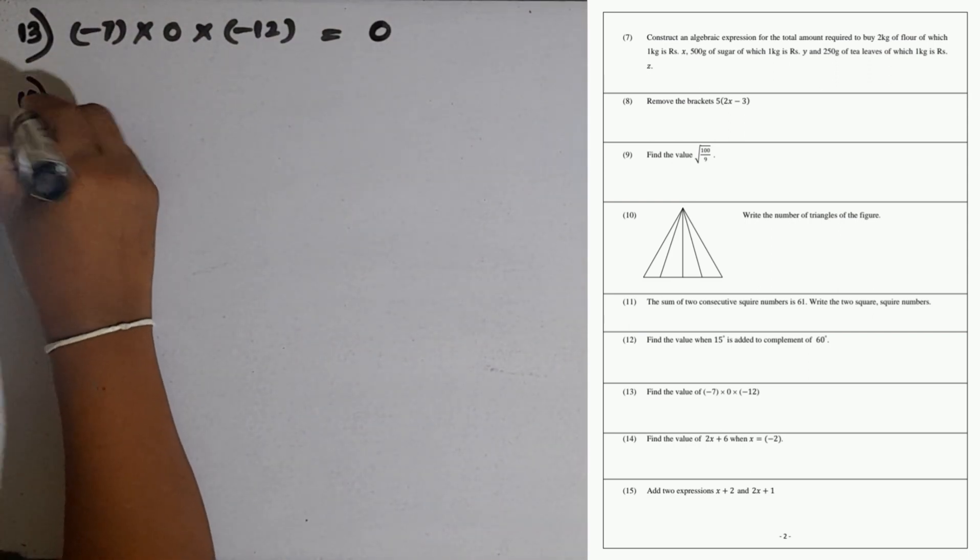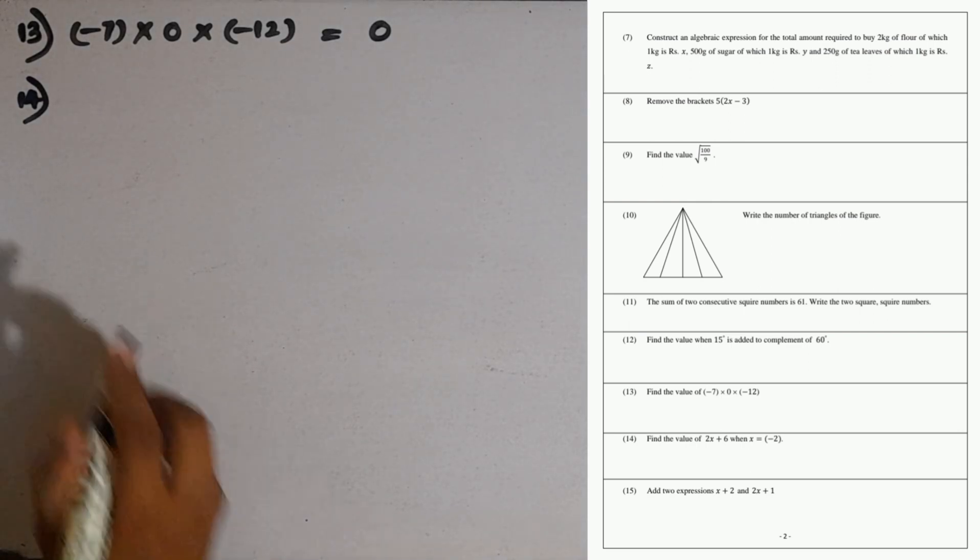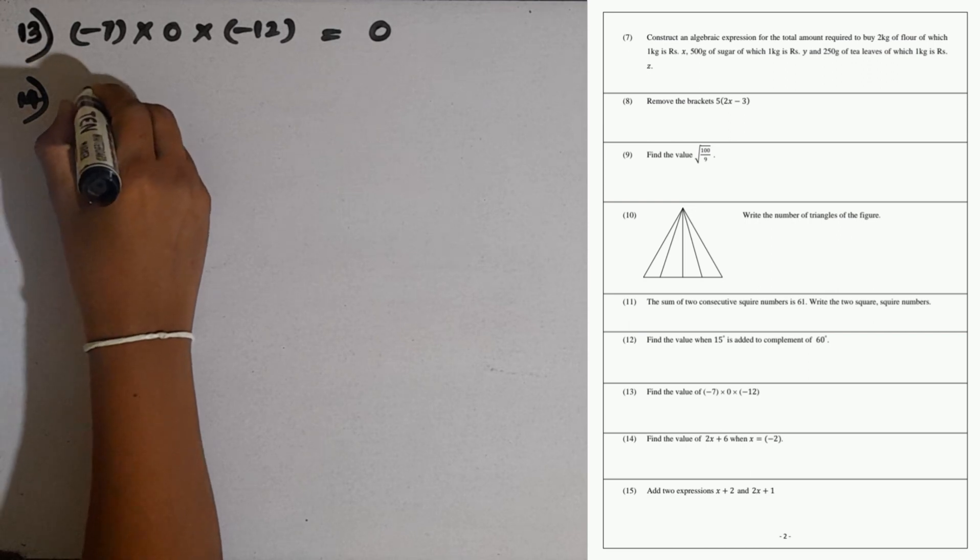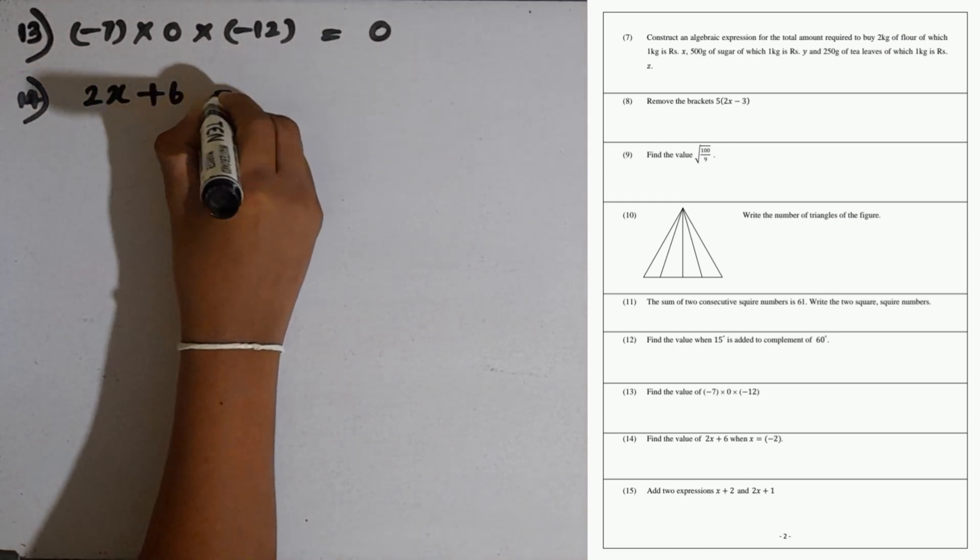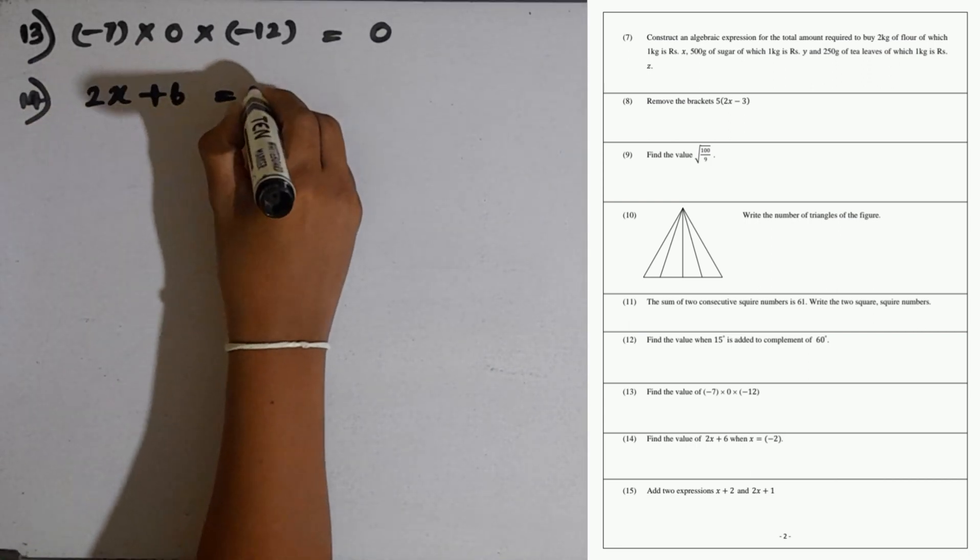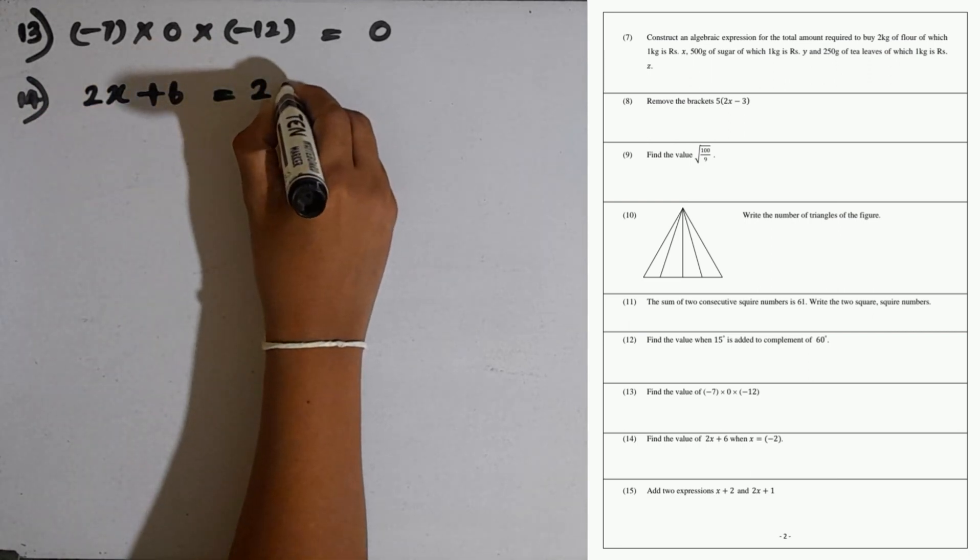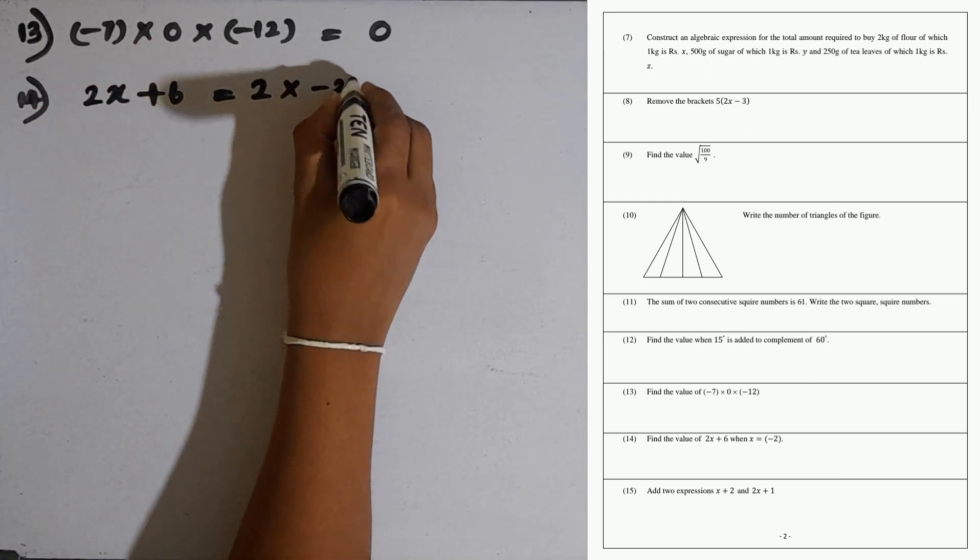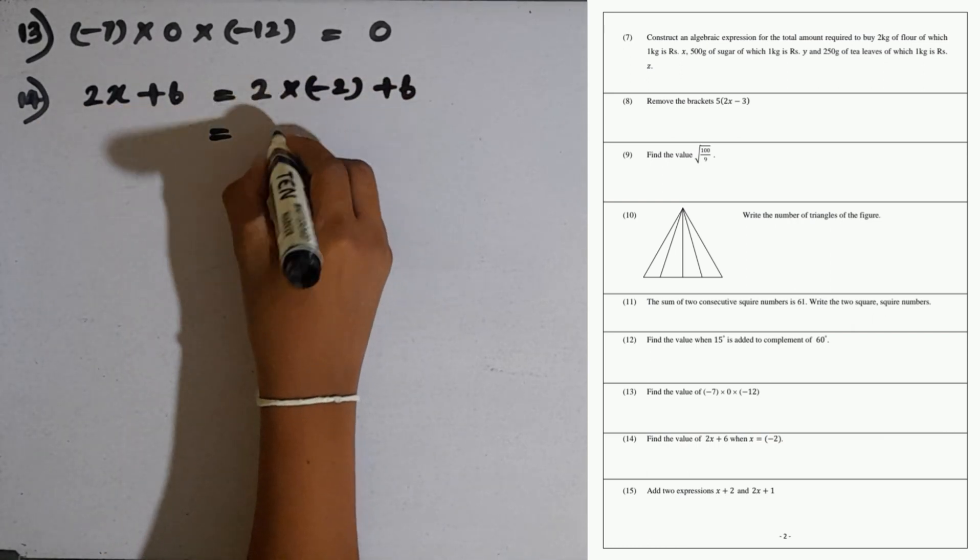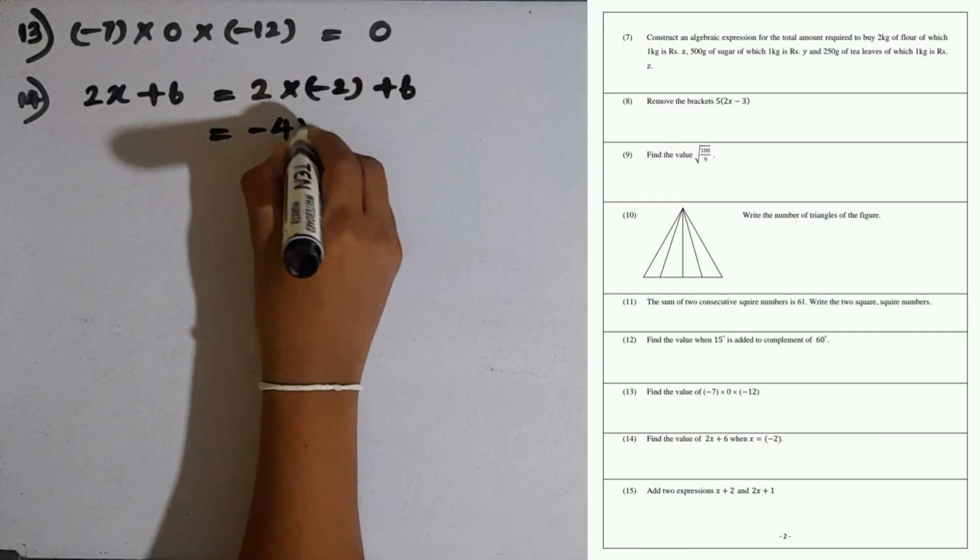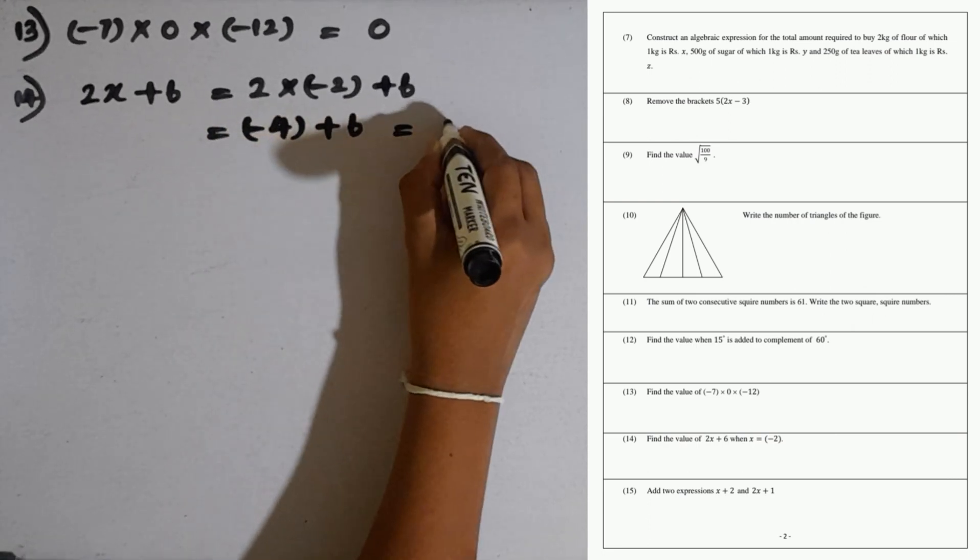Question number 14: find the value of 2x plus 6 when x equals minus 2. We have to substitute the given value for x here. 2x means 2 multiplied by x, 2 multiplied by minus 2 plus 6. 2 multiplied by minus 2 is minus 4. Minus 4 plus 6, the answer is plus 2.